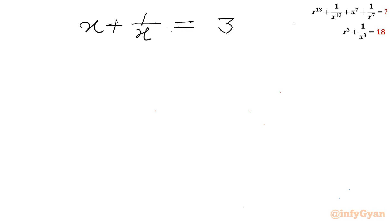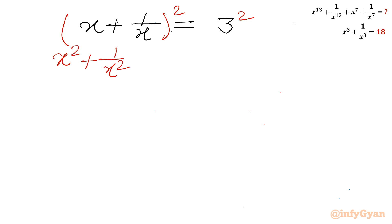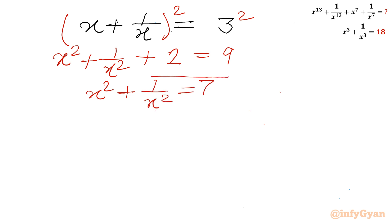Now I will square both sides using the (a + b) whole square formula. So x square plus 1 over x square plus 2 times x times 1 over x equals 9, meaning x square plus 1 over x square plus 2 equal to 9. Therefore x square plus 1 over x square equal to 7.